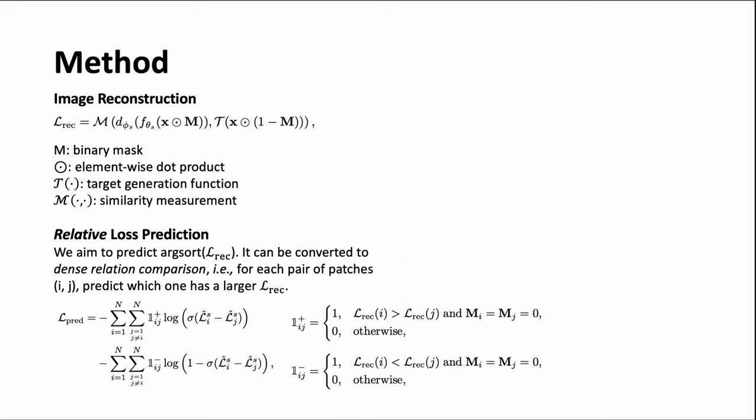Here are detailed formulations of the objectives. We designed a novel relative loss prediction objective to train the loss predictor, avoiding it being overwhelmed by the exact values of reconstruction losses. Specifically, it is trained to predict which patch has a larger reconstruction loss within each patch pair.